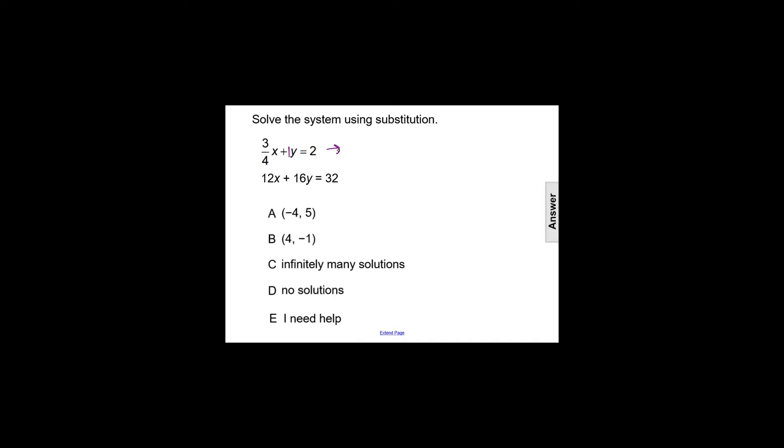If we subtract 3 fourths from both sides, we get y solved for as y equals negative 3 fourths x plus 2. Now that we've solved for y, we can take that expression.